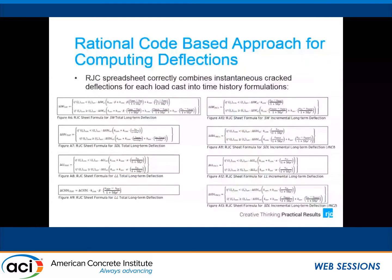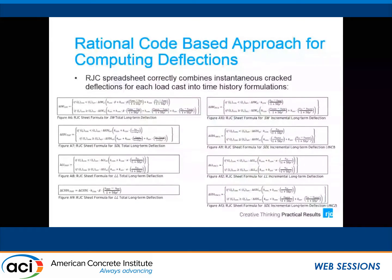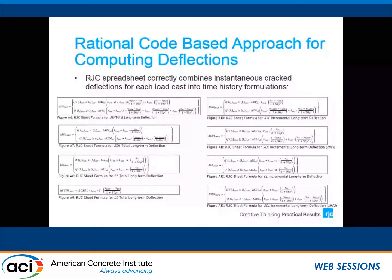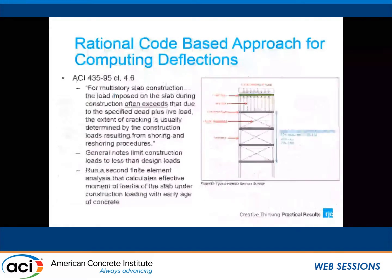We've taken these generic equations, which have been published based on the Canadian code — which is very similar to what's in ACI — and pieced together a program with a lot of ifs and ors. You're basically just running your SAFE model and inputting data from two separate runs into a post-processor that gives you the right stiffness along the way.